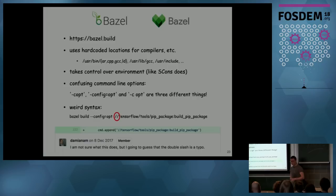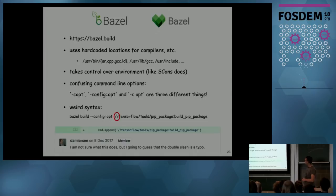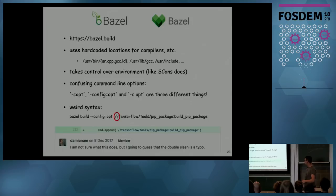Bazel uses hard-coded locations for compilers: the compiler is at /usr/bin/gcc, include files are in /usr/include, libraries are in /usr/lib. It does the same thing as SCons — it takes control over the environment, puts you in a box, has full control, things are reproducible, that's great. Its command line options: it has --c_opt, --config=opt, and space opt — three entirely different things. It also has weird syntax: 'bazel build config:opt //' and then whatever you want to build. People get confused — this looks like a typo. This is just how Bazel works.